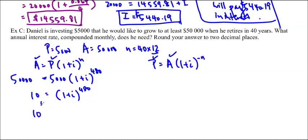So, this is 10 to the 1 over 480 equals 1 plus I. So, I ends up being approximately 0.0048. Of course, this isn't the per annum rate.